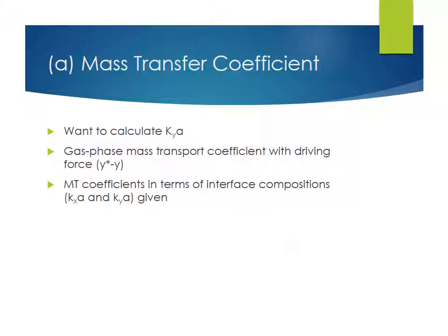So for the first part, we need to calculate capital KYA. And remember, this is the gas phase mass transport coefficient with a driving force proportional to Y star minus Y. So it's different from lowercase KYA, just to remind you. So the mass transfer coefficients that we're given are in terms of interface compositions, lowercase KXA and lowercase KYA. So in order to calculate this, if you remember from the notes, what we can do is use a relationship between all of these mass transfer coefficients. So 1 over capital KYA is given by 1 over lowercase KYA plus the slope of the equilibrium Y diagram, which I'm writing as capital K here, divided by lowercase KXA.